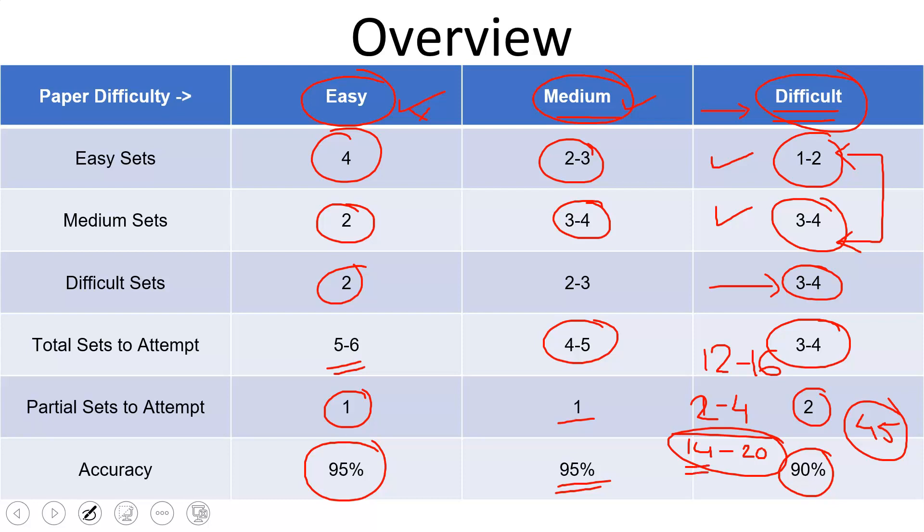You might feel fourteen questions is a bit less. Yes, it is less. So when you are attempting three sets, make sure the partial sets you are attempting more of that. So you are attempting four questions through partial solving. So please keep this in mind. Your actual attempt should somewhere hover around seventeen, eighteen. This is what I tell my students. And if you are going with a ninety percent accuracy, I am very sure that you would be cracking it in a very good manner.